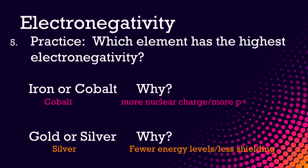Here's another explanation. The reason cobalt has higher electronegativity is because it has more nuclear charge and more protons. For silver, it has fewer energy levels and less shielding of its nucleus.